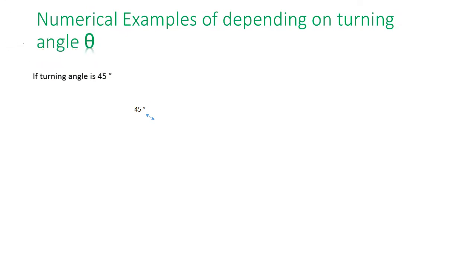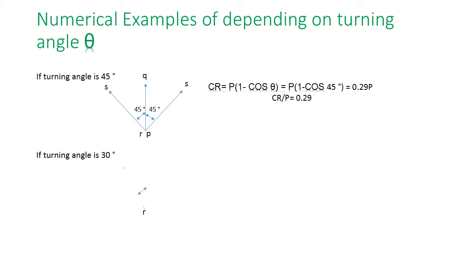These are the numerical examples depending on turning angle theta in curve resistance. If turning angle is 45 degree, the curve resistance value comes 0.29 times of pulling power loss in actual tractive force to traveling the vehicle in curved path. If turning angle is 30 degree, the curve resistance of loss is 0.134 times of pulling power in the vehicle.